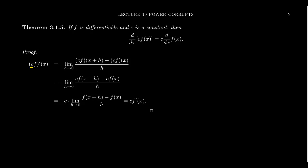If we have our constant c and we take the function c times f and want to calculate its derivative, then by the definition of the derivative, this is the limit of the difference quotient, where we take cf at the point x plus h, subtract cf at x, and divide everything by h.